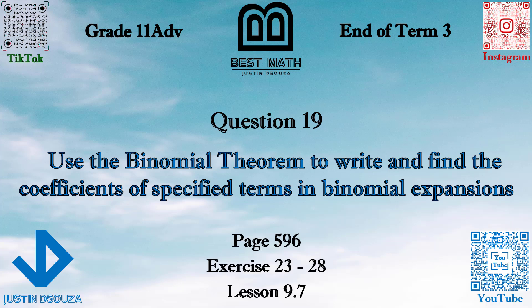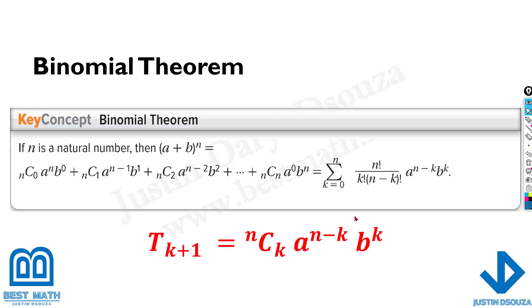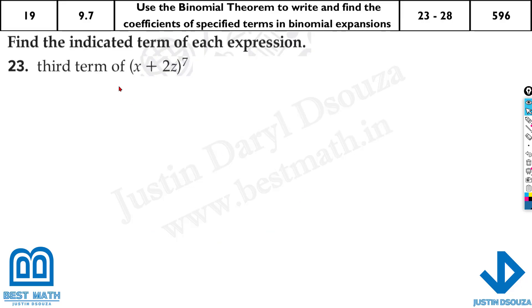In this question we will use the binomial theorem to find the specified terms. Here we have a very important formula — this is the binomial theorem formula, everything is in detail. Now this is formalized for any specified term, and this k plus 1, n, k — everything I will tell you with the example. Let's go to the first example itself.